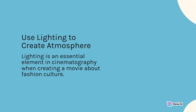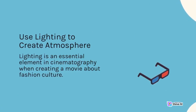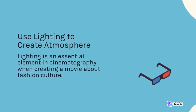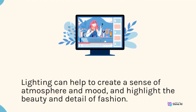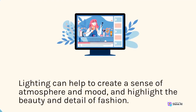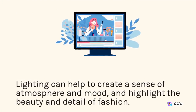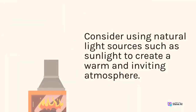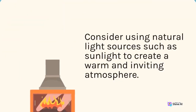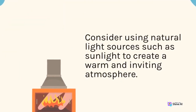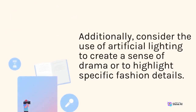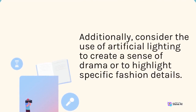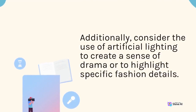Use lighting to create atmosphere. Lighting is an essential element in cinematography when creating a movie about fashion culture. Lighting can help to create a sense of atmosphere and mood, and highlight the beauty and detail of fashion. Consider using natural light sources such as sunlight to create a warm and inviting atmosphere. Additionally, consider the use of artificial lighting to create a sense of drama or to highlight specific fashion details.